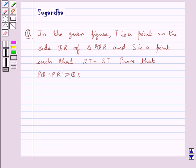Hello and welcome to the session. In this session we discuss the following question which says: In the given figure, T is a point on the side QR of triangle PQR and S is a point such that RT is equal to ST. Prove that PQ plus PR is greater than QS.